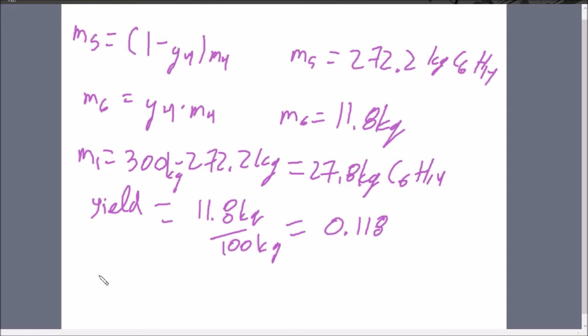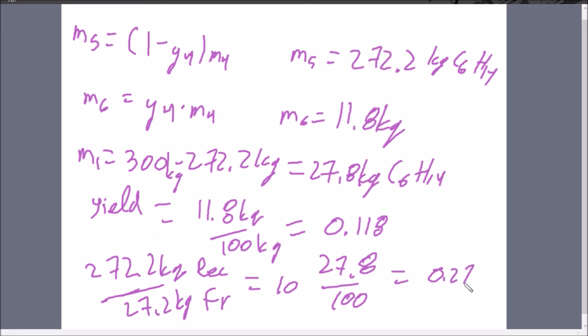Then we had, lastly, there's two more. The recycle stream ratio, how much is being recycled for everything being freshly put in. 272.2 kg divided by our 27.2 kg. This was fresh. This is recycled. You're going to get 10 as your ratio. And then, the other one is how much fresh stuff is put in per 100 kilograms of bean stuff. And that's simply 27.8 divided by 100, and that gives you a 0.278.